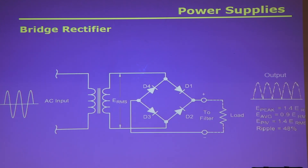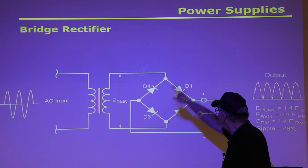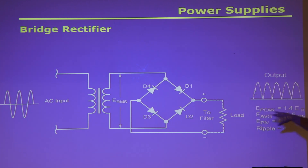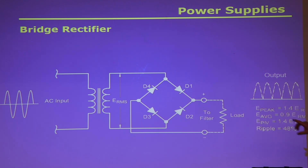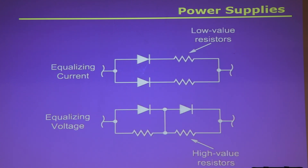A bridge rectifier does the same thing as a full-wave rectifier but needs four diodes. It conducts half the cycle around one side, half the cycle around the other — gives the same kind of output but doesn't need a center-tapped transformer. Center-tapped transformers are more expensive and harder to find, so most circuits prefer a bridge rectifier. Those come in a single package with four leads. The less peaks in the output, the easier it is to filter from AC to DC.